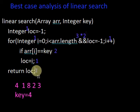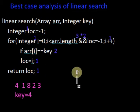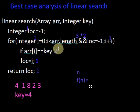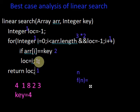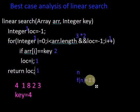Finally, 'return location' — one operation is executed. So if n is the size of the input, what is f(n), the running time or time complexity of linear search in the best case? Counting all operations: one, two, three, four, five, six, seven — seven plus six — it is thirteen. So f(n) is found to be a constant value of thirteen.